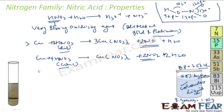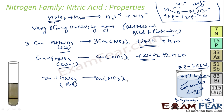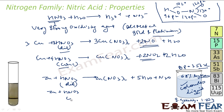The same pattern applies to zinc. Zinc with dilute nitric acid gives Zn(NO₃)₂ plus water plus N₂O, while zinc with concentrated nitric acid gives Zn(NO₃)₂ plus 2H₂O plus 2NO₂.